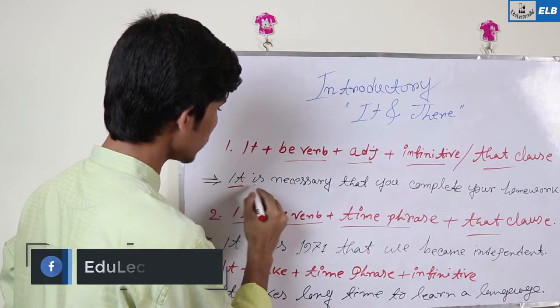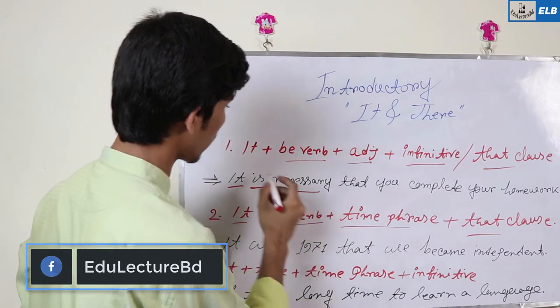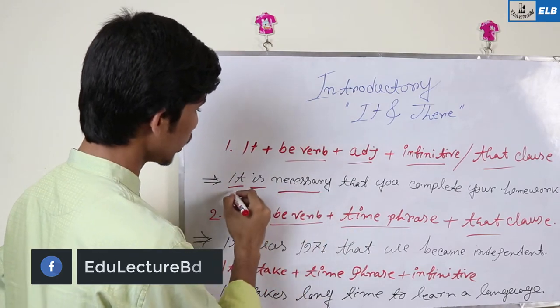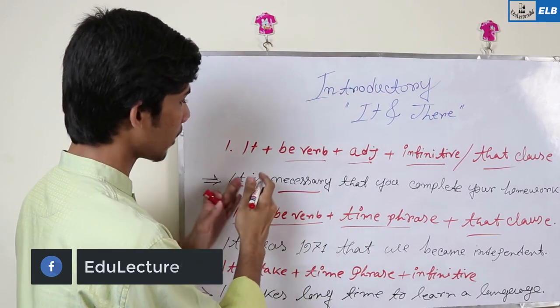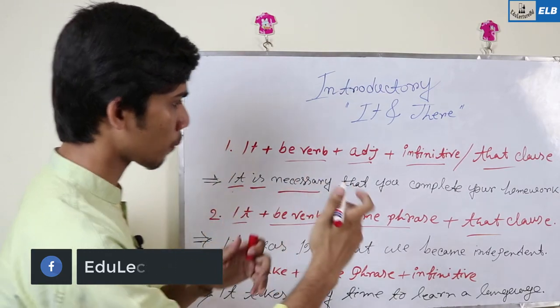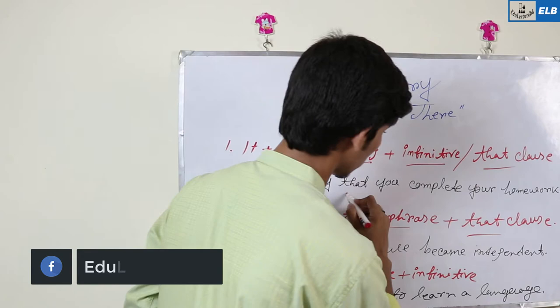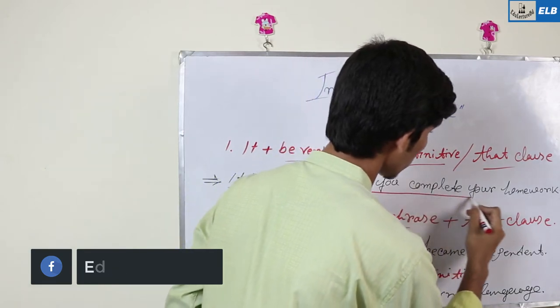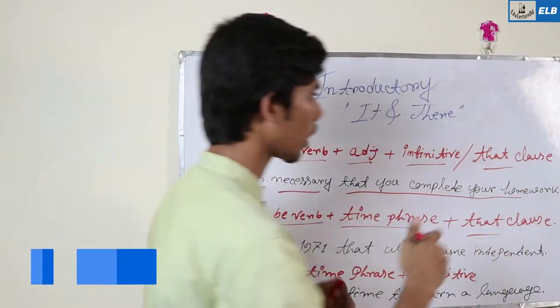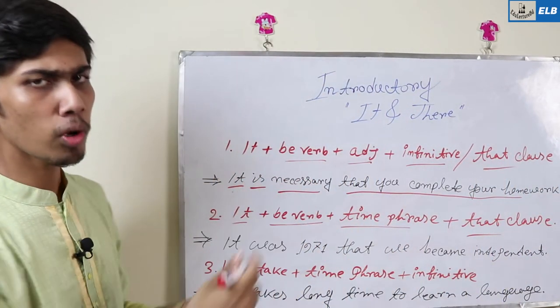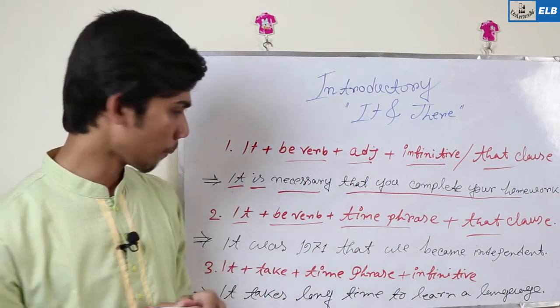Example of Rule 1: 'It is necessary that you complete your homework.' The structure is: it + be-verb ('is') + adjective ('necessary') + that clause ('that you complete your homework').